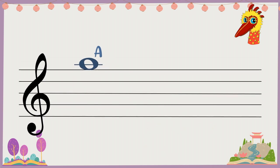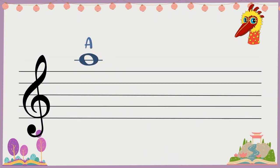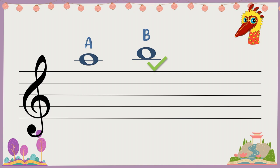This is A. This is wrong. To get B, only one ledger line, not two. Remove it. Voila. This is correct.